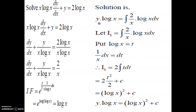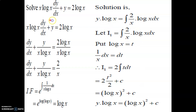Solution: y·log(x) = ∫(2/x)·log(x)dx + c. Substituting t = log(x), so dt = (1/x)dx. The integral becomes 2∫t dt. Using the power rule, ∫t dt = t²/2 + c. Resubstituting t = log(x), we get 2·(log x)²/2 + c = (log x)² + c. Therefore the general solution is y·log(x) = (log x)² + c.